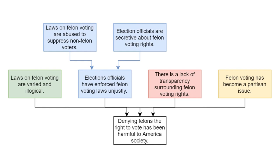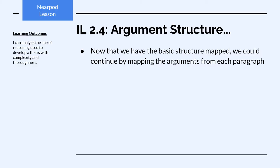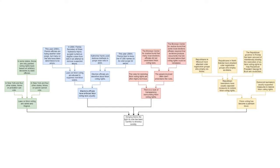I went ahead and color-coded that second line of reasoning in blue. So now I have four different lines of reasoning: green, blue, red, and yellow. That's all I want you to map with this argument — just the four lines of reasoning supporting the primary claim. After mapping the basic structure, we could continue mapping the individual arguments in each paragraph, but that's not necessary for this exercise. Go ahead and copy and paste the four lines of reasoning into your notes.